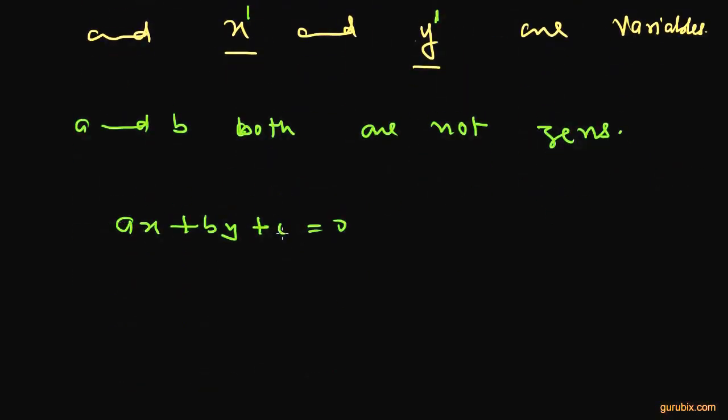This form of linear equation in two variables is also called general form. General form of linear equations in two variables.